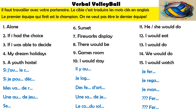Alors, mes petits, pour la deuxième tour — deuxième tour means second round. Pour la deuxième tour, maintenant, il y a les lettres qui manquent. Il faut faire exactement la même activité — anglais, français, anglais, français — mais il faut compléter la phrase aussi. Par exemple: alone, seul; if I had a choice, si j'avais le choix; if I was able to decide, si je pouvais décider; my dream holidays, mes vacances de rêve; youth hostel, auberge de jeunesse. So fast. 30 to 40 seconds is our target, our pass mark. Put me on pause and prepare, then when you're ready go for it. Bon courage, on y va.